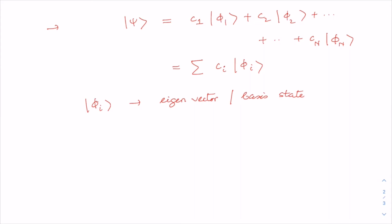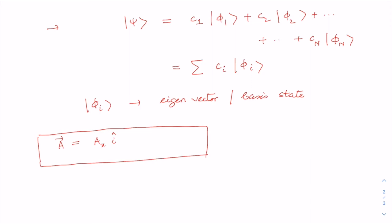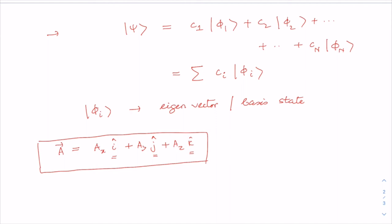To give an analogy: in classical mechanics or vector analysis, a vector in three dimensions can be written in its components. In three-dimensional space, you need three unit vectors to define the vector. In the similar spirit, in an n-dimensional Hilbert space, you need n eigenstates or basis vectors to define an arbitrary state vector |ψ⟩.